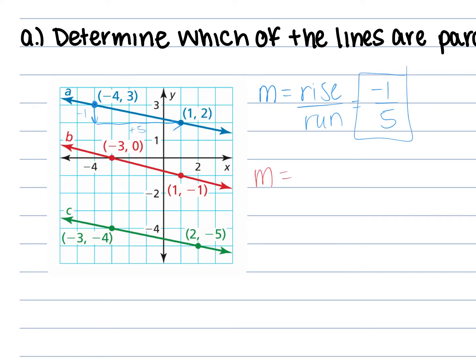For line B, m equals rise over run. We go down one and to the right four, so the slope is negative one over four. Circle it. Now for the green line, the slope is negative one over five — we went down one and to the right five. Now, which of these lines are parallel? Parallel means the slopes are the same.